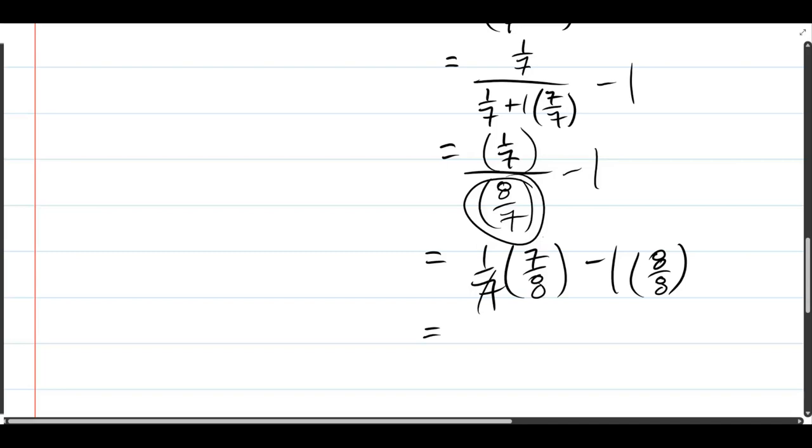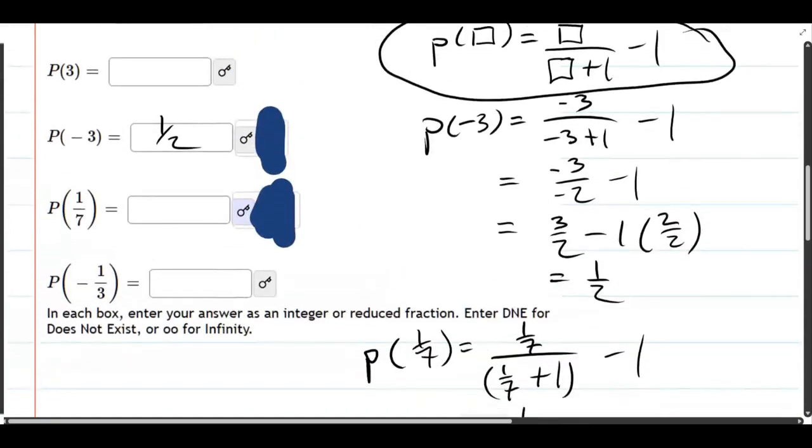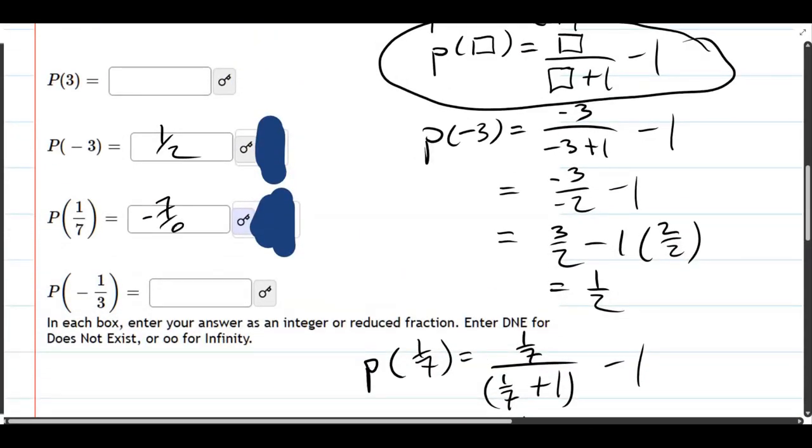All right, so canceling multiply and divide by 7, we have 1/8th minus 8/8ths. So that's negative 7/8ths. And that will go right there.